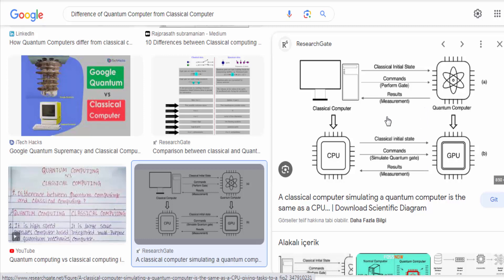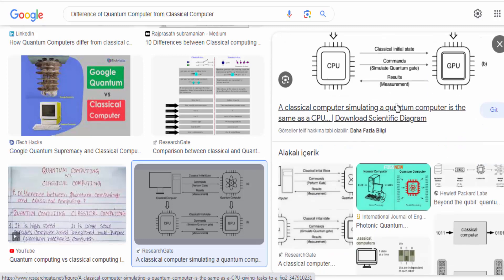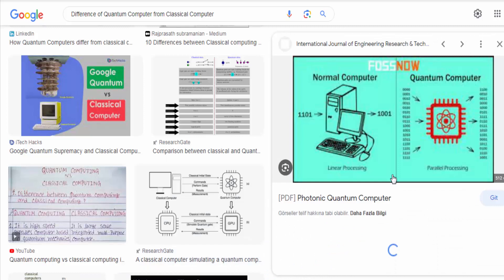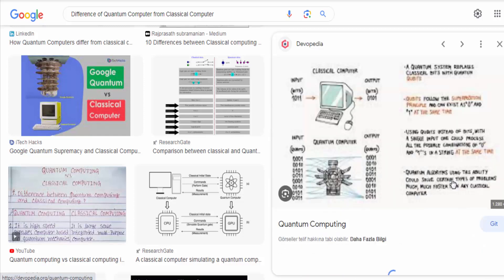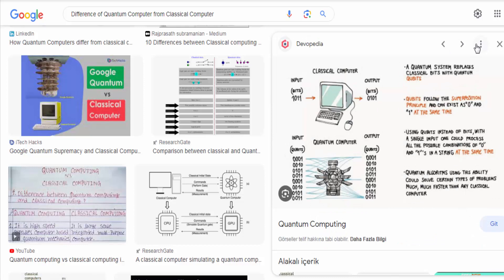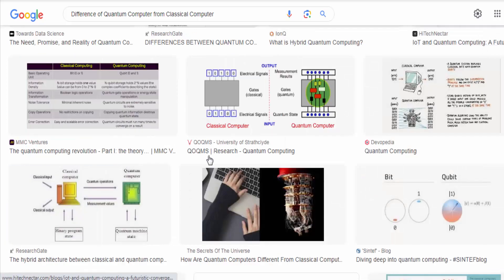Quantum superposition: Quantum computers exploit the principle of superposition, which allows qubits to exist in multiple states simultaneously. This enables quantum computers to perform multiple calculations in parallel, leading to potentially exponential speedup in certain computational tasks compared to classical computers.